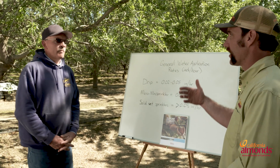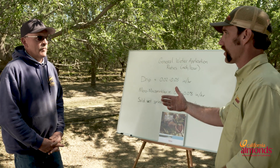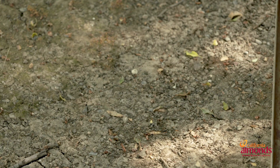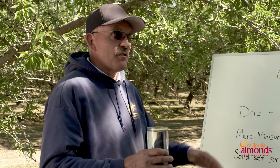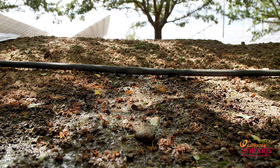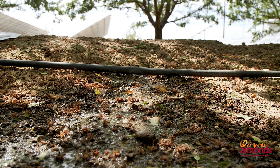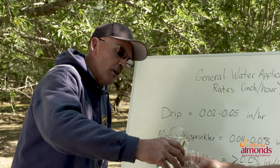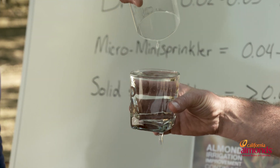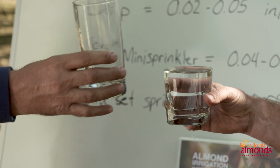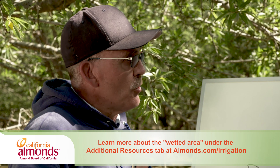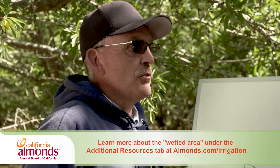One question I commonly get is: what about my wetted area? The issue is that our ET estimates are for the whole area of the orchard, but some of our irrigation systems don't wet the whole area. When you're only irrigating part of the area, you have to break it up. If you don't, you're going to put water where you don't want it to go and not necessarily supply the crop with its water requirement. The smaller the wetted area, the more you may have to use shorter sets more often during the course of those seven days.